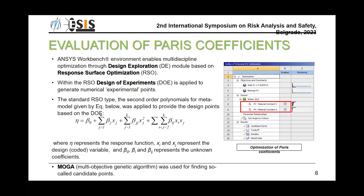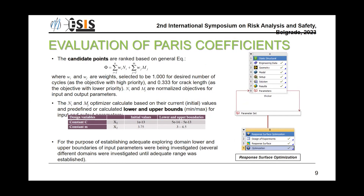ANSYS Workbench was used for this research, which allowed us to multidisciplinary optimize models based on response surface optimization, with the aim of finding candidate points. Those points are randomly based on an expression shown in the third paragraph of this slide. We also established the exploring domain with lower and upper boundaries of input parameters. As you can see on the table, we find initial values and lower and upper boundaries for both constants, C and M.